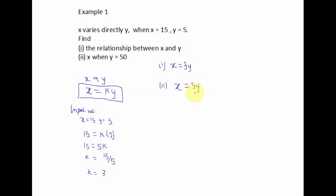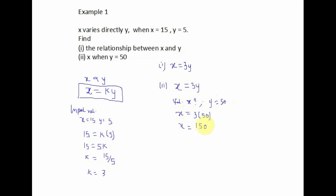To find x when y is equal to 50, we write out our relationship first: x is equal to 3y. We substitute our values — we do not know x, and we know y is equal to 50. So x is equal to 3 times 50, which gives us x is equal to 150.